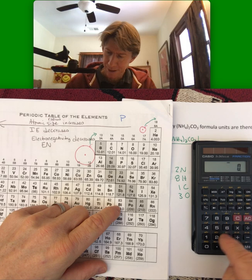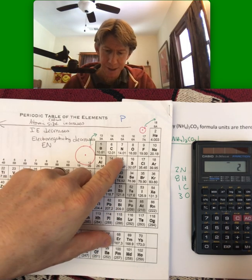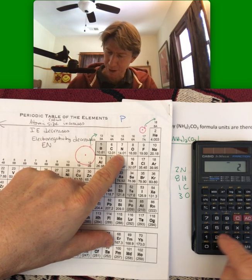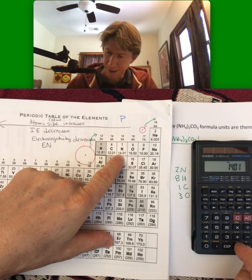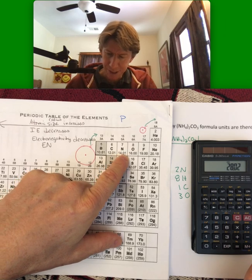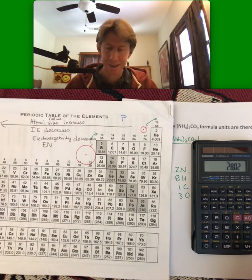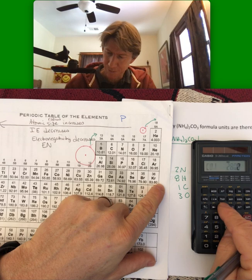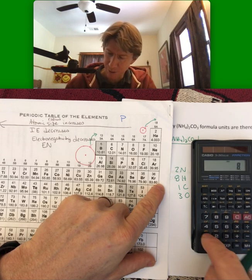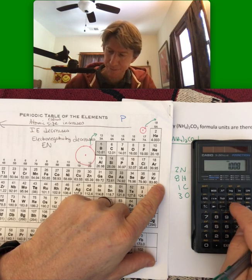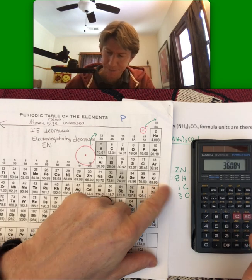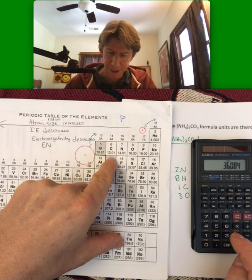We got two times nitrogen which is 14.01. Oh, my parentheses issue. Well, plus eight times hydrogen and I'm going to have to do eight times 1.008.